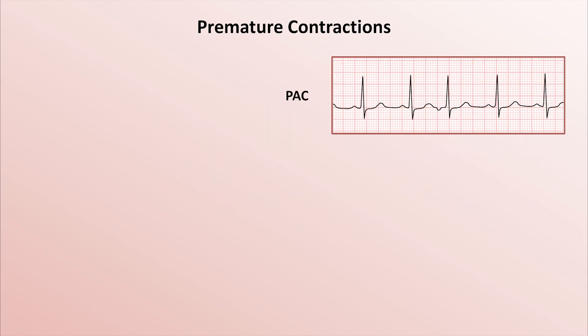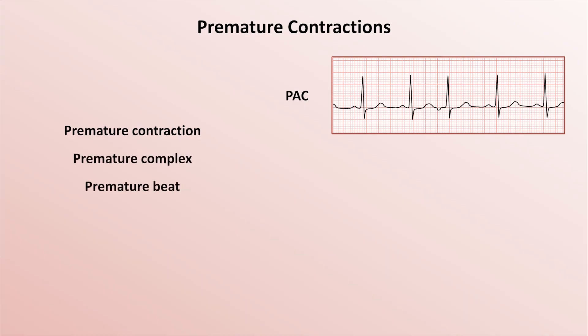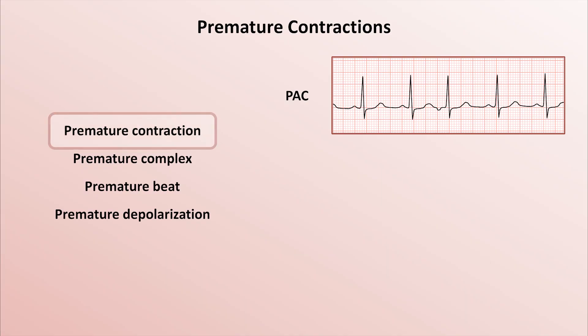This is a PAC. In the United States, it's usually referred to as a premature atrial contraction, but there are other names such as a premature complex, a premature beat, or a premature depolarization. I personally think premature depolarization is the most accurate description because it's an electrical event that does not necessarily translate into a mechanical one. However, premature contraction is by far the most common term, and that's the one I'll be using in the rest of the video.